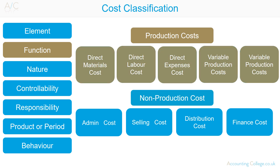Production costs include: direct materials, which are the materials that go into making a product; direct labour, which are the costs of labour directly involved in making the product; direct expenses, which are the costs of expenses directly involved in making the product; variable production overheads, which are indirect costs relating to production that vary in direct proportion to quantities of production; and fixed production overheads, which are indirect costs relating to production that are fixed and do not vary with quantities of production.